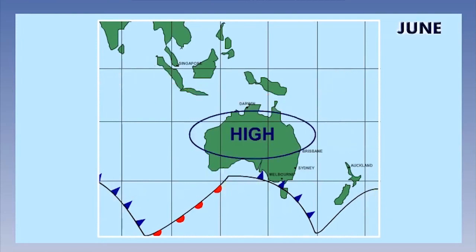In the winter month of June, the dominating pressure systems are the subtropical highs in the interior of the continent. These give dry, dusty air to most of Australia, and are a common reason for the bushfires. To the south, polar front depressions and their ridges still sweep through, bringing the usual mixture of cloud and precipitation.